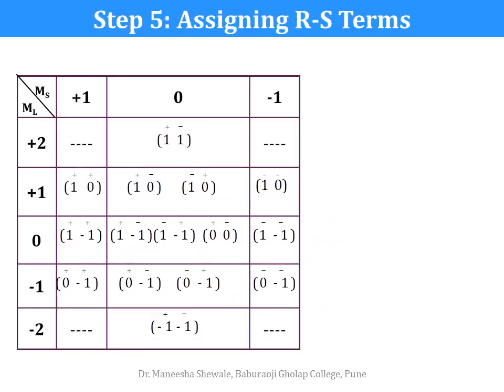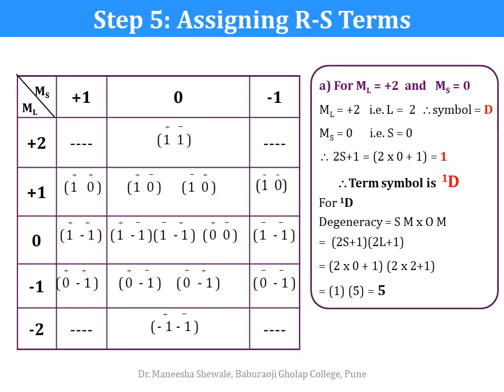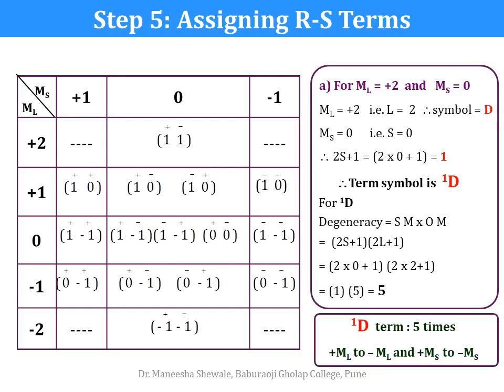Now we can assign the RS terms. We start with the highest value of ML = plus 2 and MS = 0. ML = plus 2 means L = 2, so the symbol will be D. For MS = 0, S = 0, so the spin multiplicity will be 1. Hence the term symbol is singlet D. The degeneracy for the term is calculated by multiplying spin multiplicity with orbital multiplicity. For singlet D, the degeneracy is 5. This means that the singlet D term appears 5 times in the table from ML = plus 2 to minus 2 at MS = 0.